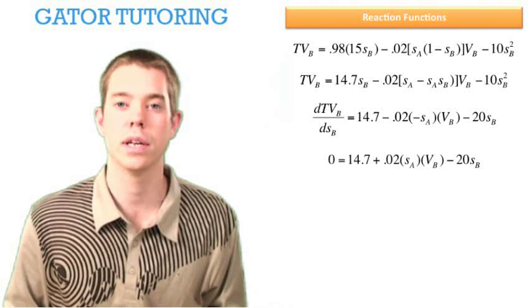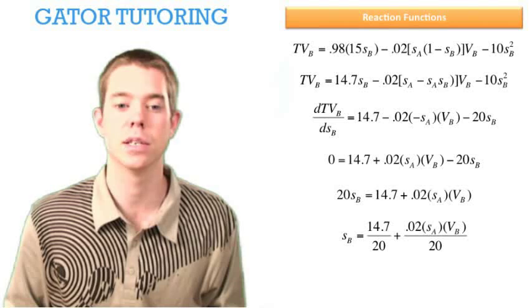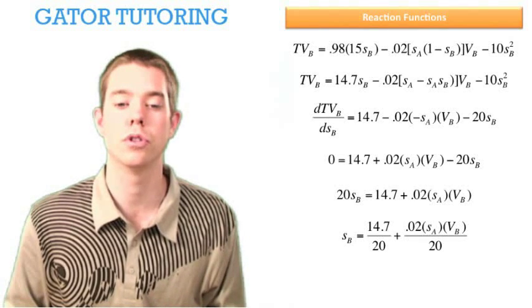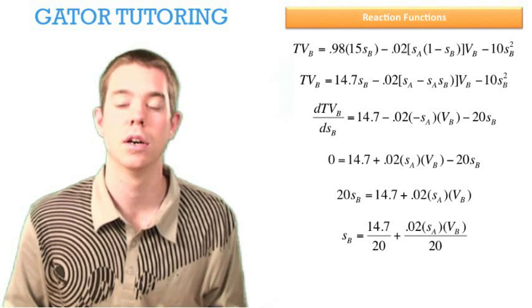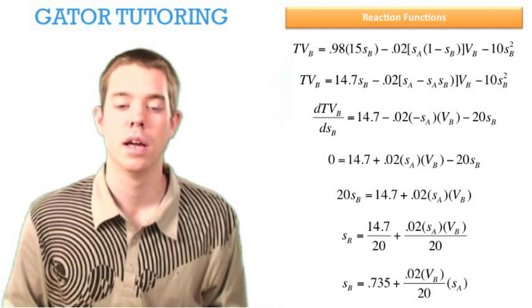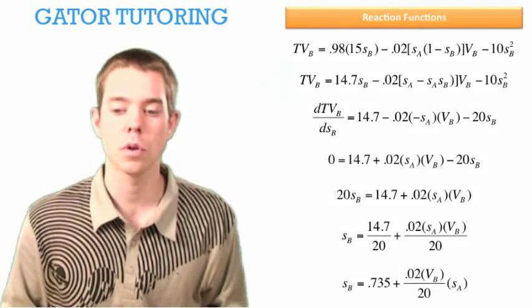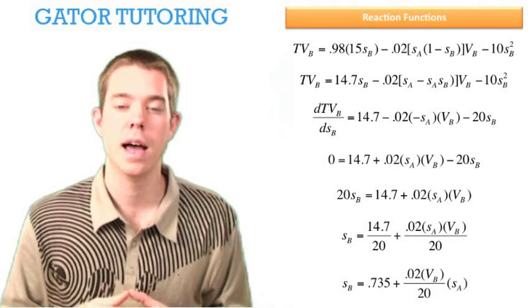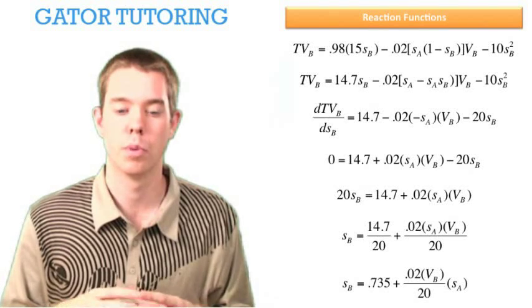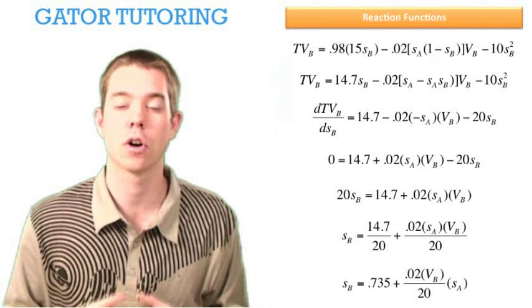We add 20*SB to both sides, and we divide through by 20. We find that SB equals 14.7 divided by 20 plus 0.02 times SA times VB, all divided by 20. We can simplify this a little bit. Now I've moved my SA by itself out to the right.